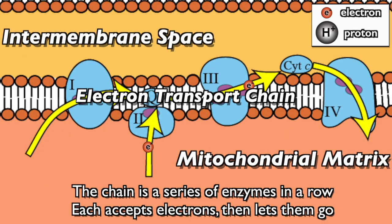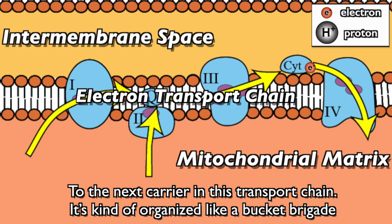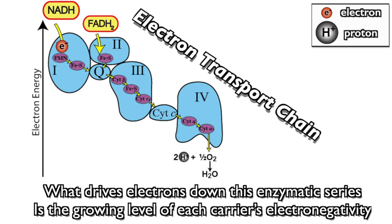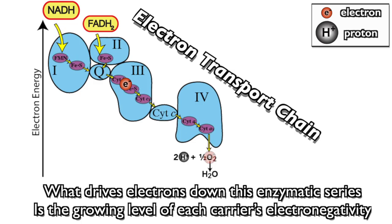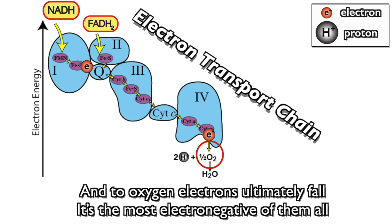The chain is a series of enzymes in a row which accepts electrons and lets them go to the next carrier in the transport chain — kind of organized like a bucket brigade. What drives electrons down this enzymatic series is the growing electronegativity of each carrier, increasing toward oxygen.